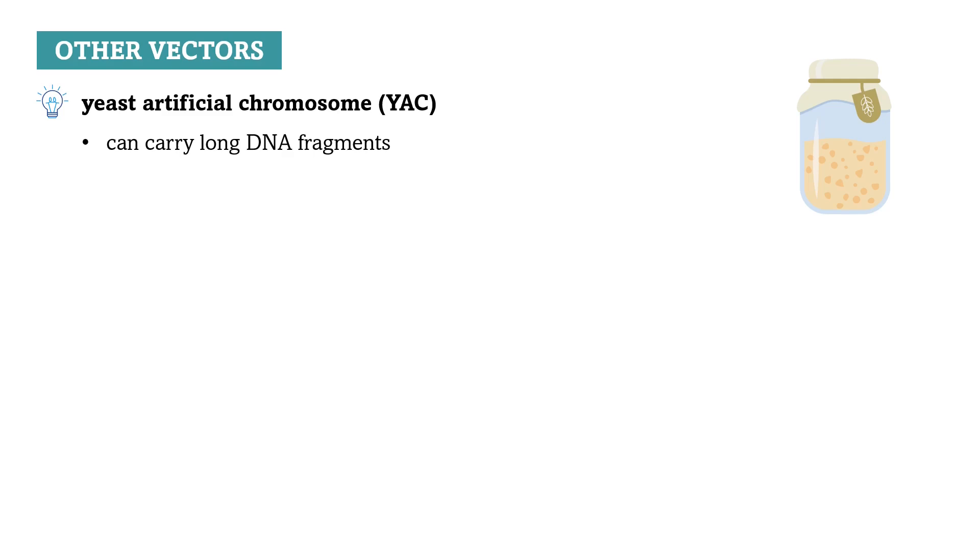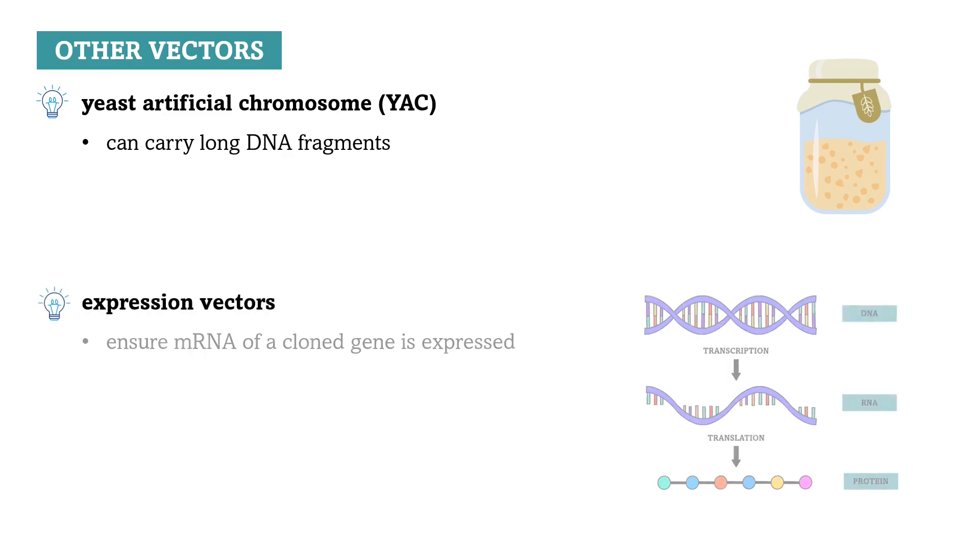We also have expression vectors that are used to ensure that the mRNA of the clone gene we inserted in the DNA fragment is expressed and the proteins it encodes are produced. Because both plasmids and phage vectors usually only carry DNA fragments and do not force the cell to transcribe them into mRNA. But expression vectors do.